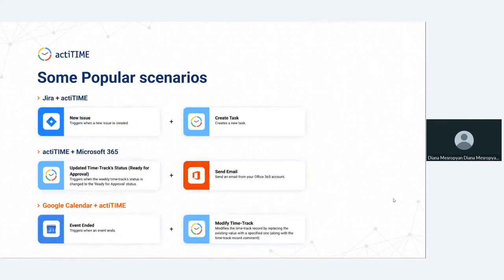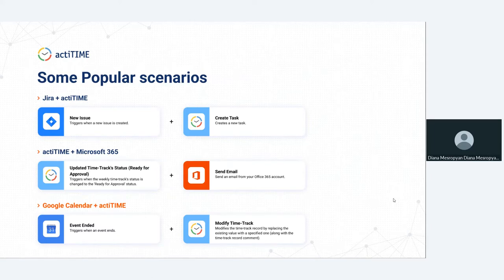The next scenario is between Jira and ActiTime. In this case, the trigger is not in ActiTime but in Jira — another popular IT platform. When a new issue is created in Jira, this automatically creates a new task in ActiTime. For those who manage tasks or issues in external platforms and want them to appear in ActiTime so users can track time against them easily and avoid manual task creation, this is a really neat integration.